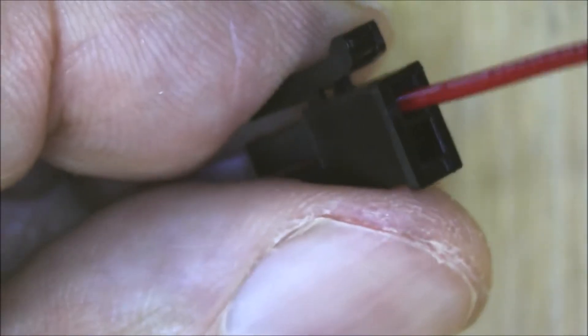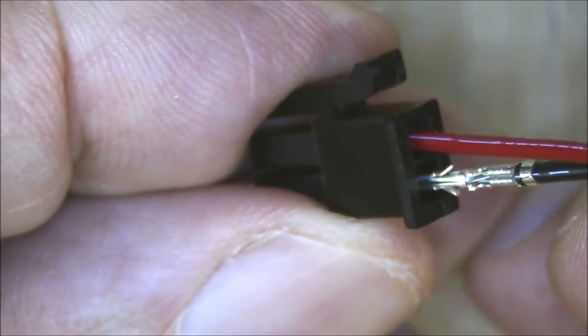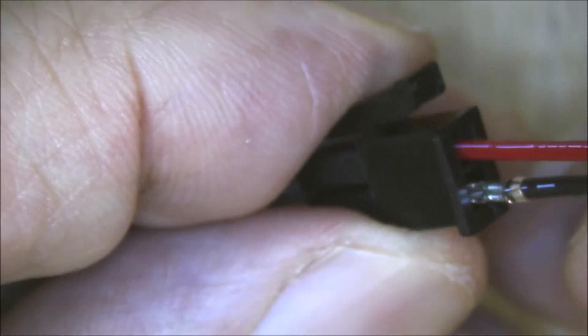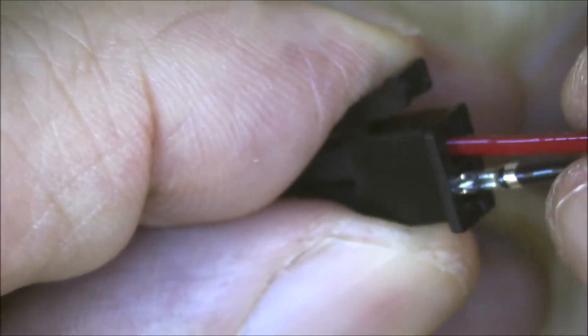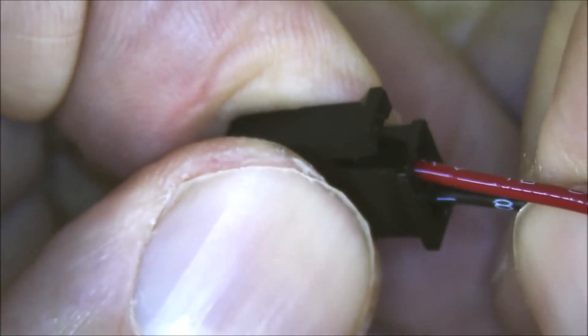These sockets and pins can be removed using a special tool that goes in from the front and compresses the retention wings so they don't catch on the retention shoulders of the plastic while you pull the pin out. I don't actually have one of these tools yet or I would demonstrate it.